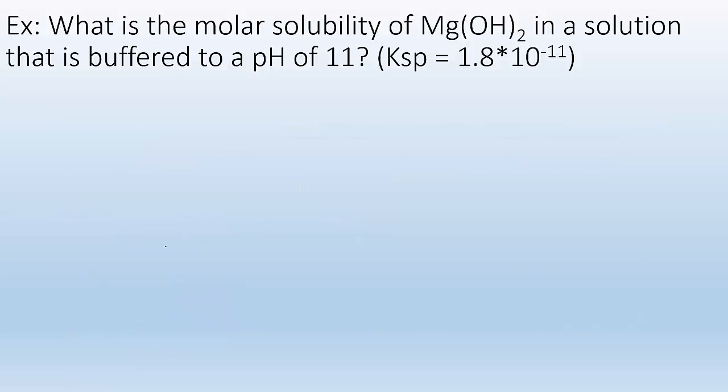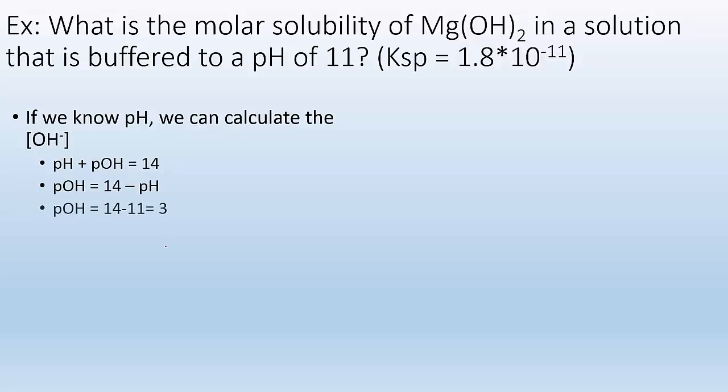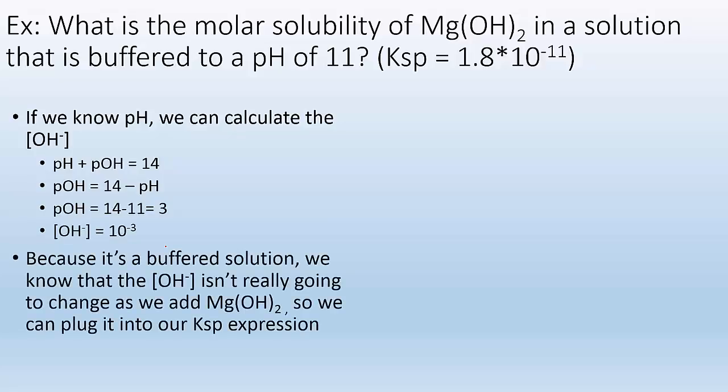Alright, what is the molar solubility of magnesium hydroxide in a solution that is buffered to a pH of 11 that give me the Ksp as 1.8 times 10 to minus 11? So if we know the pH, we can calculate the OH minus, right? So pH plus pOH equals 14. If pH is 11, the pOH has to be 3, which tells me the OH- concentration is 10 to the minus 3. Because it's a buffered solution, we know that the OH- isn't really going to change as we add more magnesium hydroxide.